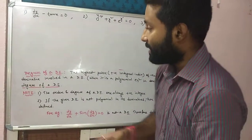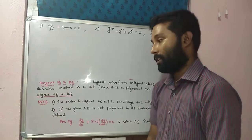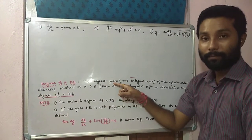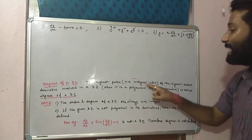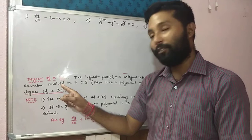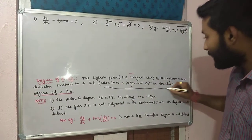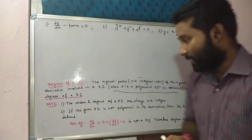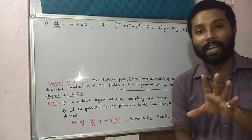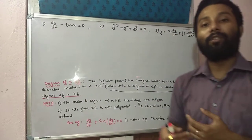Next I will discuss the degree of a differential equation. After order of a differential equation, the next point is degree of a differential equation. The highest power should be a positive integral index — specifically, the highest power of the highest order derivative involved in a differential equation. This is the most important part to find the degree. When it is a polynomial equation in its derivative, if a differential equation is not polynomial in its derivative, then we cannot find the degree. Degree is always undefined in that case.